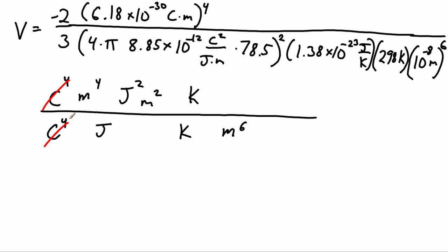We get rid of the coulombs first. We've got meters to the fourth and to the second, so we can get rid of meters to the sixth. We can get rid of kelvins. The last thing is we have one unit of joules here, two up here, so we're left with joules. We're trying to calculate potential energy, so that's great.